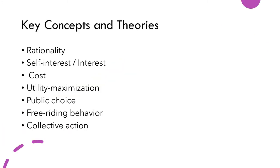RCT derives many of its assumptions from economics. Political scientists who use the approach also deliberately use the methods of economics in their study. This includes the ideas of rationality, self-interest or interest, cost, utility maximization, public choice, free riding behavior, and collective action.